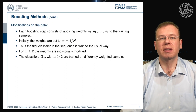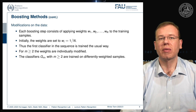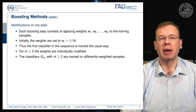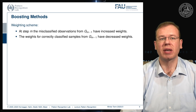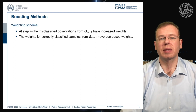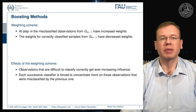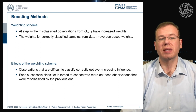Each boosting step applies weights to the training samples that amplify the weight of misclassified samples. Initially you start with uniformly distributed weights, so the first classifier is trained the usual way. For m greater or equal to two, the weights are individually modified and classifiers g_m are trained on differently weighted samples. The weighting scheme at step m increases weights for misclassified observations and decreases weights for correctly classified ones, so observations that are difficult to classify get ever-increasing influence. Each successive classifier is forced to concentrate more on those observations misclassified by the previous one.